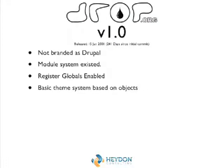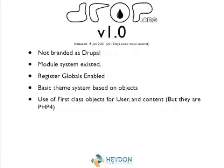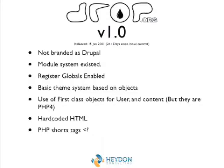The basic theme engine was very basic and based on objects — just an object with the theme page in it to print the header and footer. Also, one of the big arguments that's always come up is why isn't Drupal using first-class objects. We actually did right from the start — content, user, everything done that way.